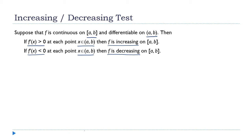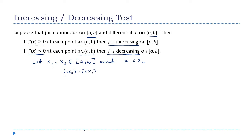I'm going to prove the increasing case and leave the decreasing one for practice. Let x1 and x2 be elements of that interval, and let x1 be the smaller of the two. To do this I need to pull out the Mean Value Theorem. The MVT says if I look at the ratio [f(x2) minus f(x1)] over [x2 minus x1], there exists some number c on that interval such that this equals f'(c).